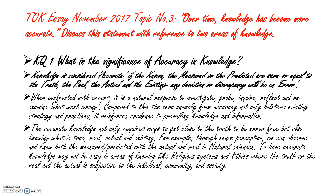Accurate knowledge not only requires ways to get close to the truth and to be error-free, but also knowing what is true, real, actual and existing. For example, through sense perception we can observe and know both the measured and practiced with the actual and real in natural sciences. Accurate knowledge may not be easy in areas like religious systems and ethics, where the truth or the real is subjective to the individual, community and society.